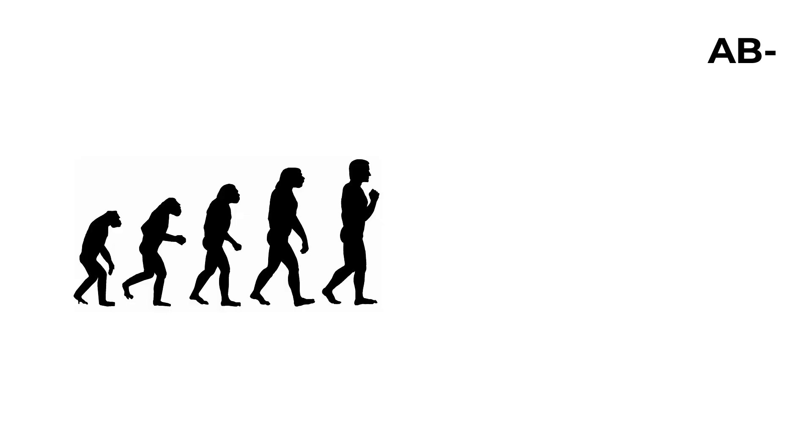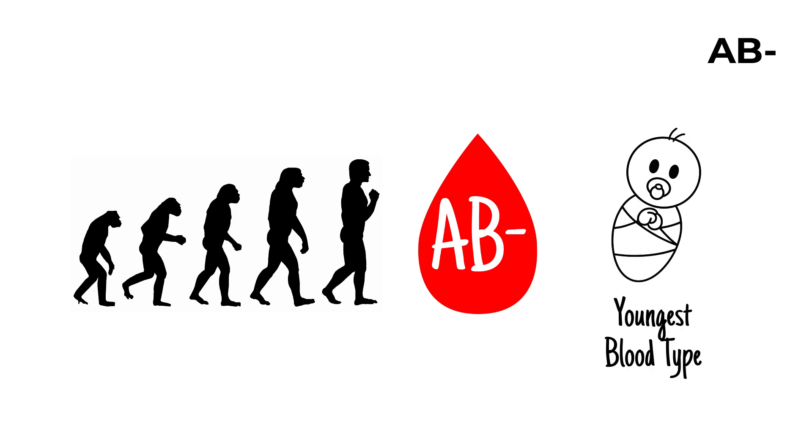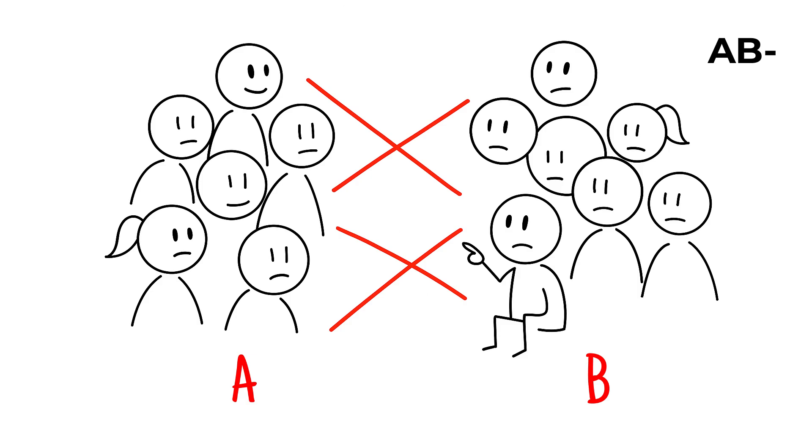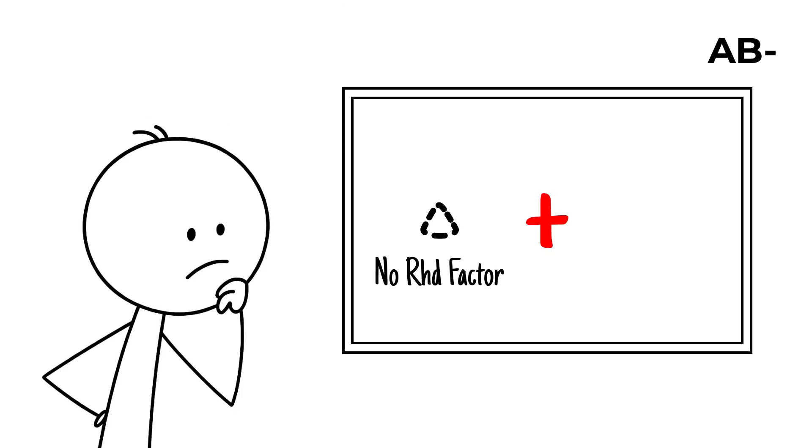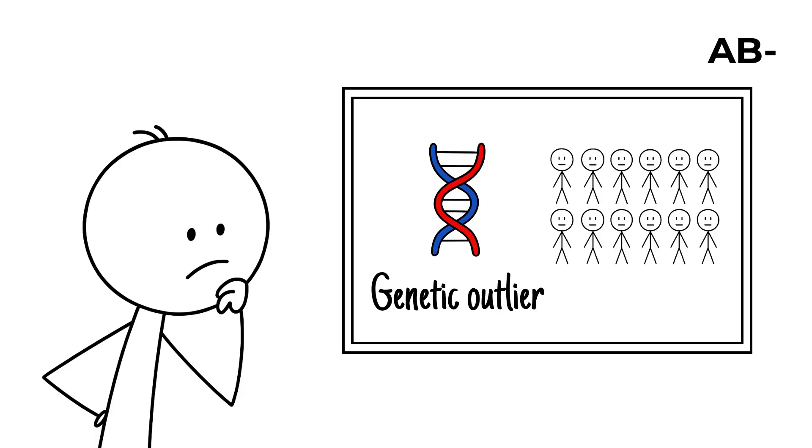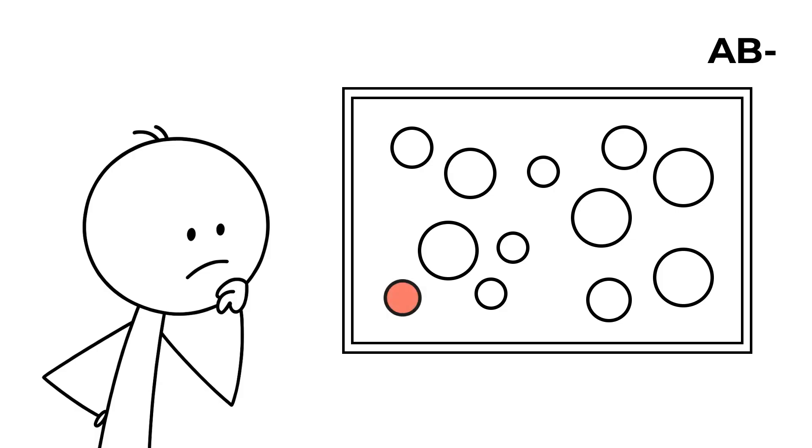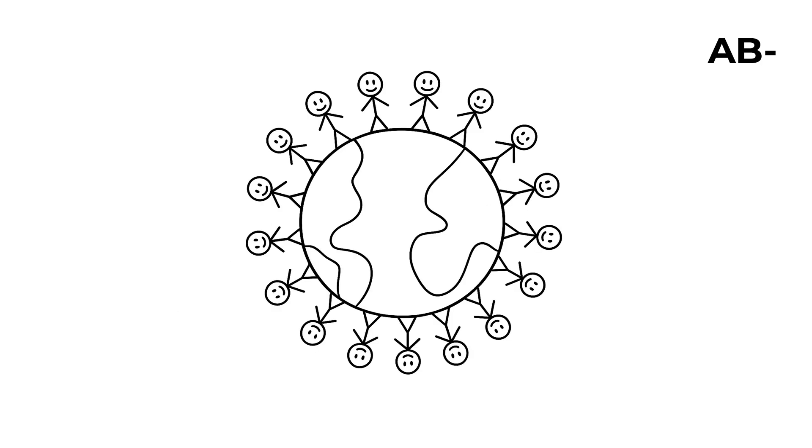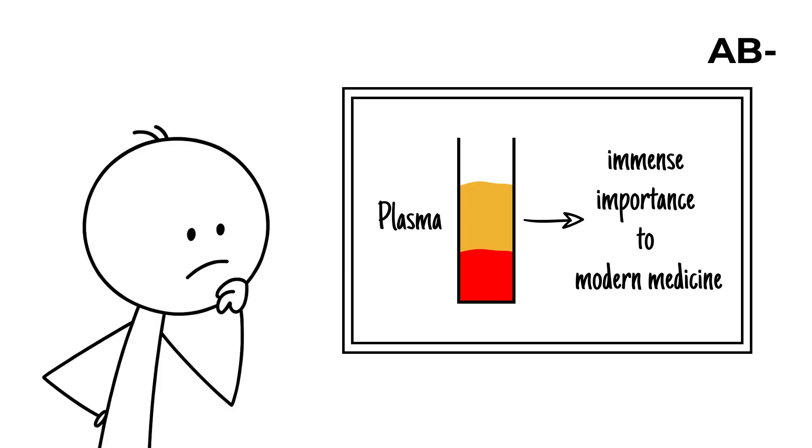From an evolutionary standpoint, AB is considered the youngest blood type, believed to have appeared just a few thousand years ago through the merging of A and B populations. The added absence of the Rh D factor makes AB negative even more exceptional, a true genetic rarity among humans. This scarcity highlights both the richness and fragility of blood inheritance. People with AB negative blood make up only a tiny fraction of humanity, yet their plasma is of immense importance to modern medicine.